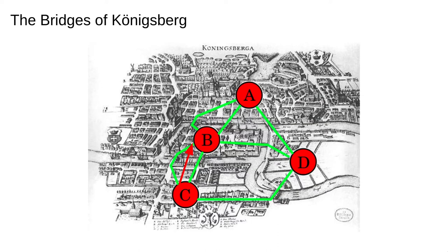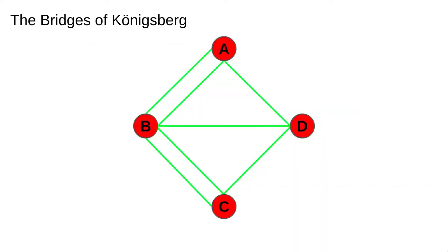Let's attempt to walk around the city, starting at node C and crossing the bridge to get to B, going from B to A, from A back to B, from B back to C, C to D — where to now? If we go to B, we've already used all the bridges connected to B, so we're stuck. If we go to A, we've already used the bridges there too, so we're stuck again. It seems like this route can't work.